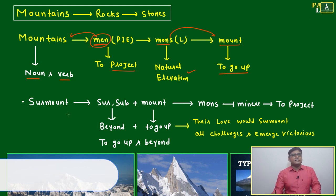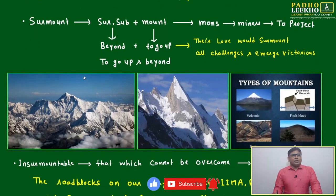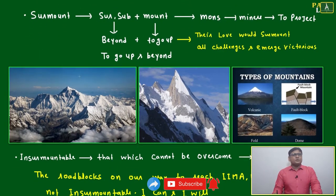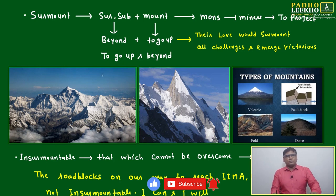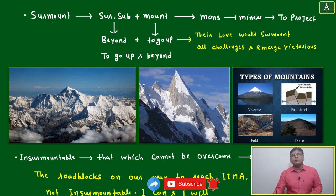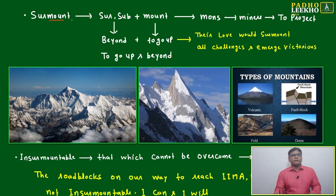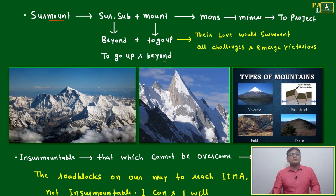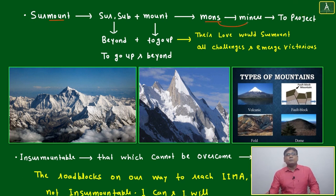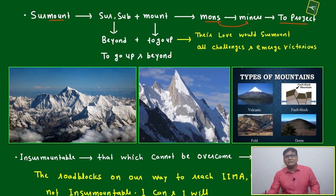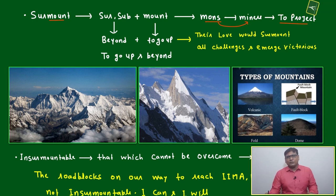Now related to this, we'll try to understand a very good set of vocabulary which is very popular and frequently used. 'Surmount' — what does 'sur' mean? 'Sur' means beyond. 'To go up and beyond.' 'Mons' means another derivative root. There is also 'minary,' which means to project. So two roots to understand about the mountain: 'mons,' or 'men,' or 'minary.'